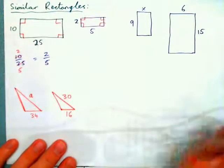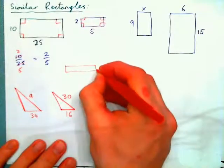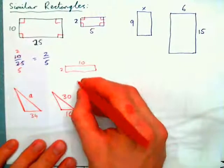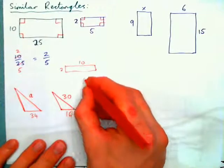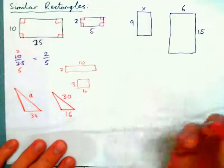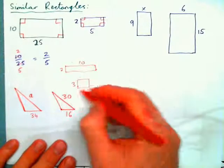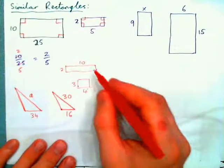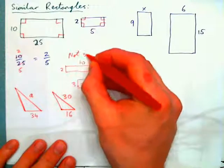Rectangles aren't always similar. You could have one shape that is 2 by 10, and another that is 3 by 4. Obviously those are not going to give you a proportion — two fractions equal to each other. These are not similar.